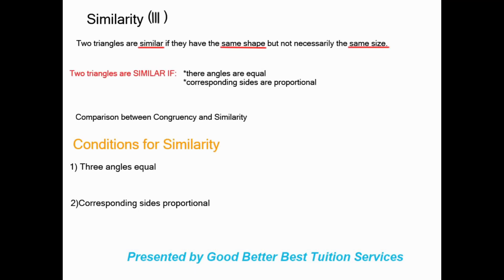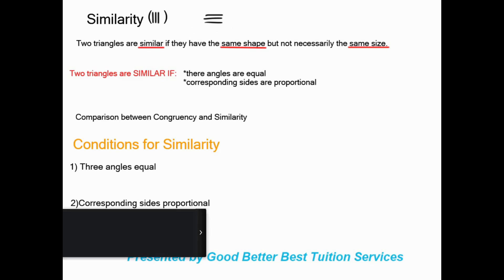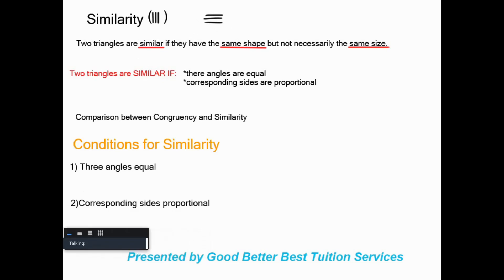Good morning and thank you for joining us. Today's lesson we'll be looking at similarity. The sign we're going to use is these three lines that are vertical. Remember when we were doing congruency the lines would go like this, so now we're just turning them 90 degrees and we'll get the sign for similarity.